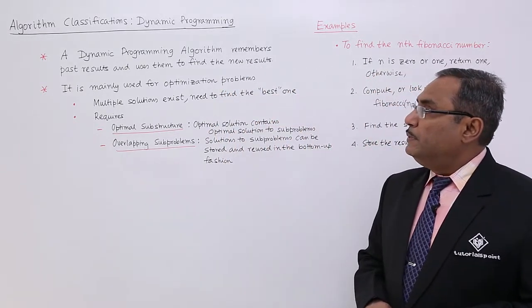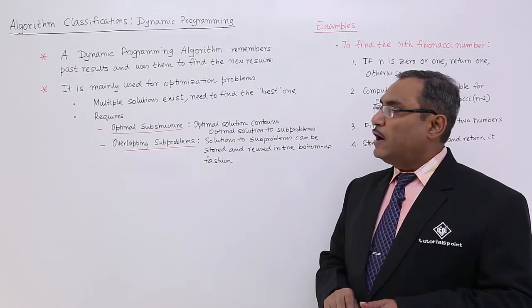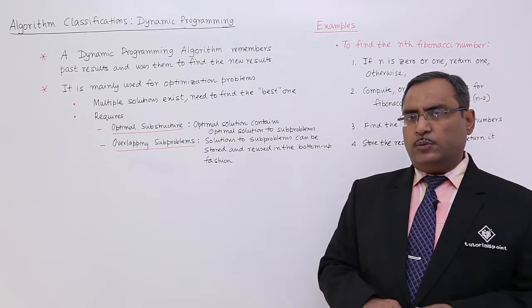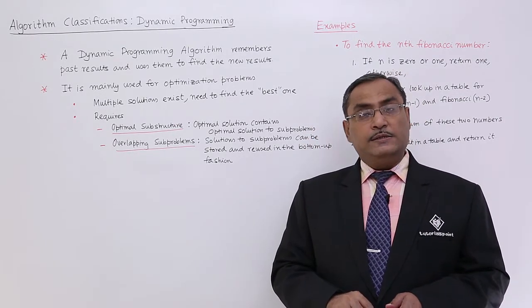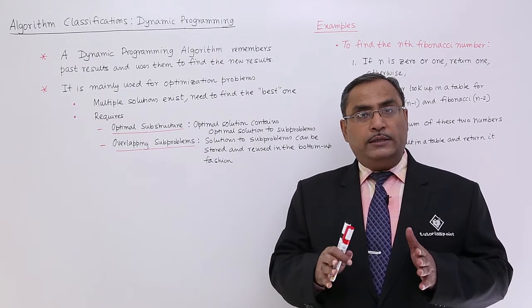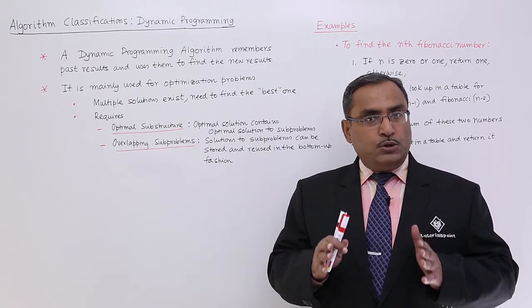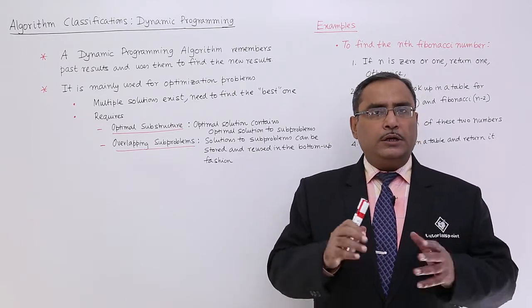A dynamic programming algorithm remembers past results and uses them to find new results. This is one of the very important and basic features of dynamic programming. It is mainly used for optimization problems where the past results will be used to frame up the new results.